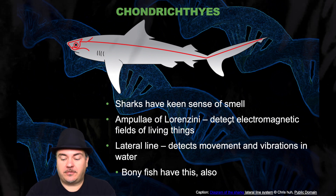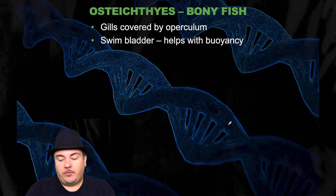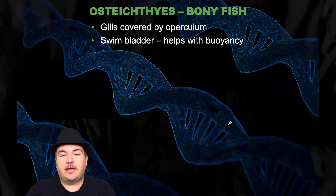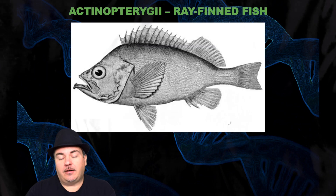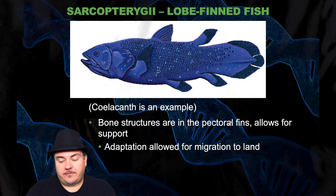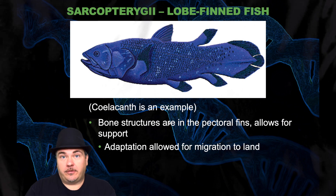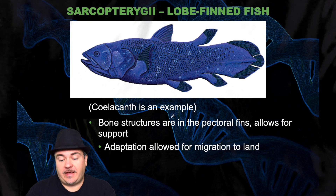Then you have the bony fish, the Osteichthyes. They have gills covered by an operculum, and they have a swim bladder which helps them with buoyancy. Out of the bony fish you have the ray-finned fish and the lobe-finned fish. The bone structures are in the pectoral fins, which allows for support, and over an evolutionary timescale that allows for adaptation for migration to land.